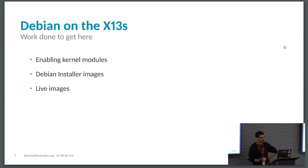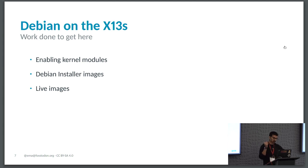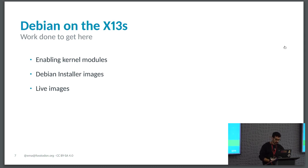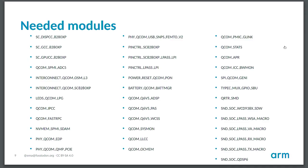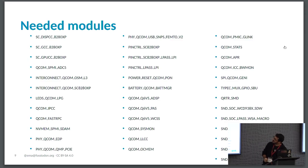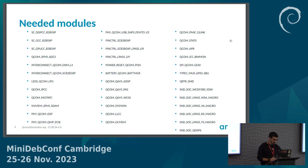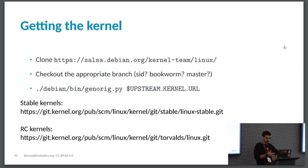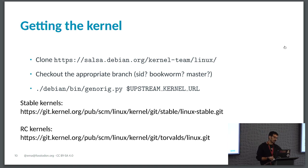Now, going to the details of the work done to get there: enabling kernel modules, building Debian installer images, and building live images is mostly what we've been doing. Here is a partial list of the modules we had to enable—quite a few, as you can see. Not all of these modules are immediately needed to boot the machine; we'll see which are enabled at which stage of the installation process.